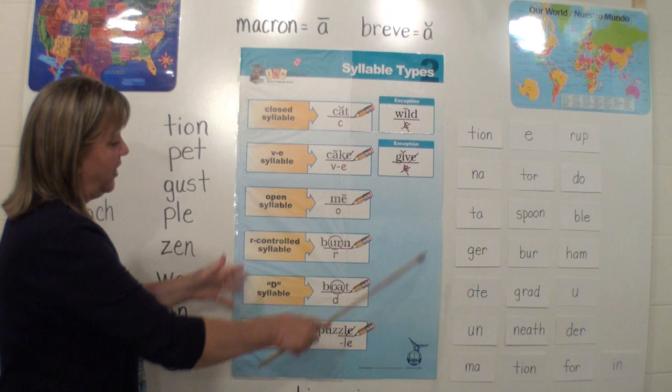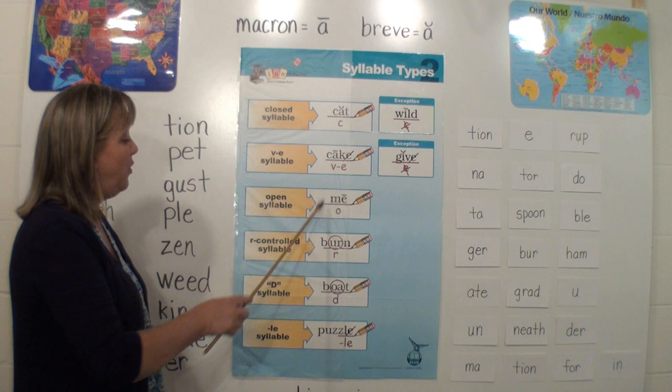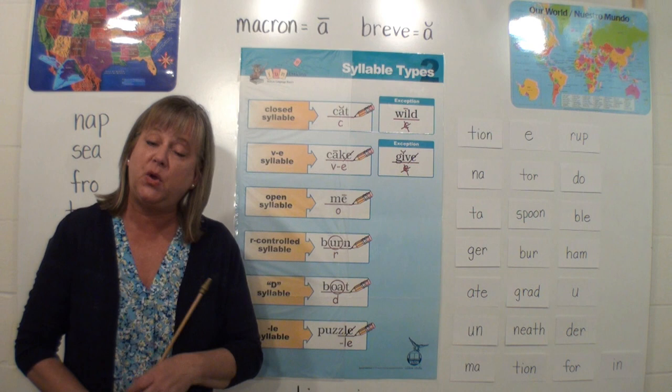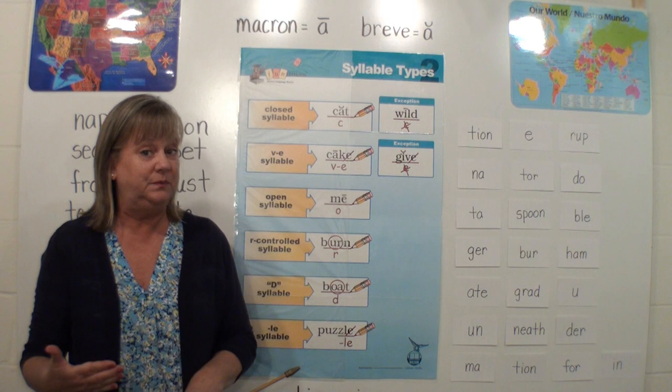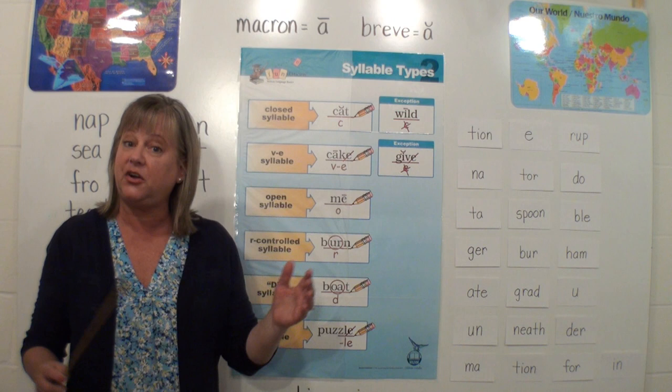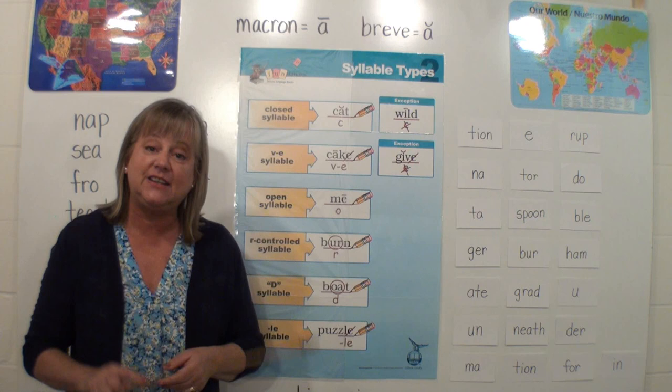Now, the reason knowing our syllable types is important — and you have studied these all year with your spelling words — is because we know we can read short words; we have a lot of those memorized. But what happens when we come to a multi-syllabic word? Multi means many, syllabic has to do with syllables. When we're in third grade reading harder words that are much longer, we have to chunk them — we can't sound them out letter by letter. We need to look for our syllables in longer words.